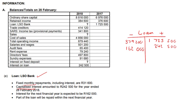Part of the loan will be repaid within the next financial year — that's our current portion of loan. Loan is a long-term, non-current liability. The portion to be repaid within 12 months gets transferred to the balance sheet as current portion of loan. To calculate it: 379,200 minus 162,000 gives you 217,200.